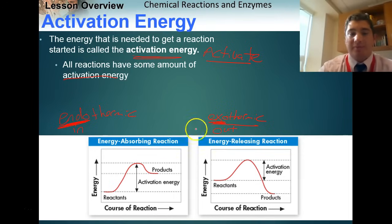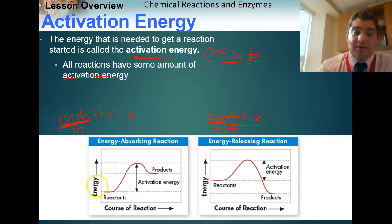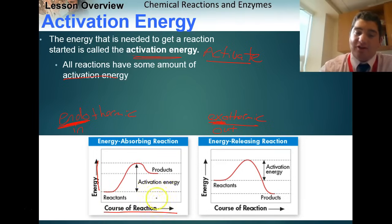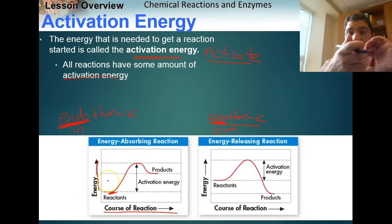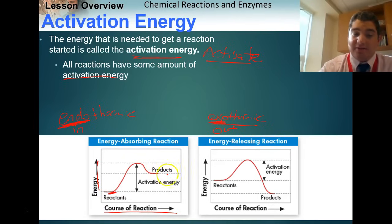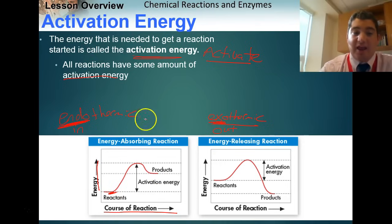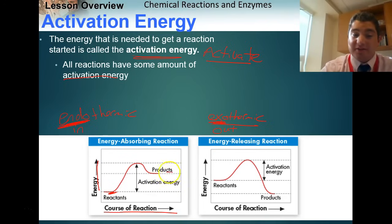Exothermic reactions release energy; endothermic reactions take in energy. The prefix 'endo' means going in, and 'exo' — like an exit — means going out. Looking at these two graphs, with energy on the y-axis and time on the x-axis: in an endothermic reaction, the products are higher on the graph than the reactants.